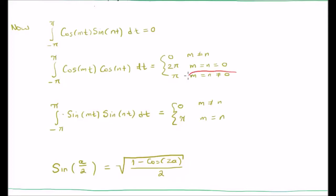And when m is equal to n and non-zero, we get pi. So this means that this integral pretty much will always be 0 unless m equals n, and thereafter, this integral becomes essentially the integral of cosine squared, and we get pi.